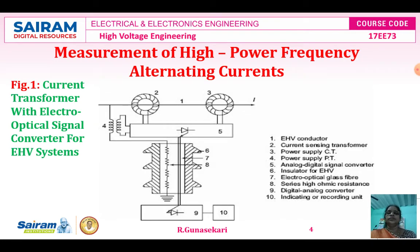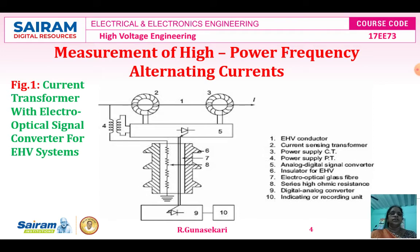This is the figure for the current transformer with electro-optical signal converter for extra high voltage systems. This current transformer with electro-optical principle consists of 10 numbered components mentioned in the figure. Component 1 is the EHV conductor, 2 is the current sensing transformer, 3 is the power supply current transformer, and 4 is the power supply potential transformer.